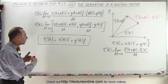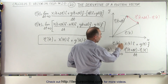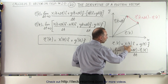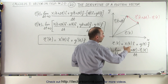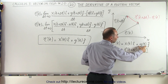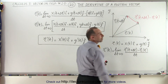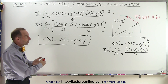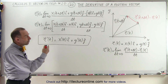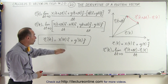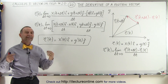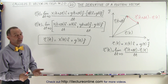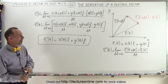So you can see that whatever function you have, if you want to know the derivative of the position vector, you simply take the derivative of the x component with respect to the parametric variable t, and you take the derivative of the y component with respect to the parametric variable t. If you have a function defined in terms of x and y components, simply take the derivative of each component, and that will give you the derivative of the position vector. It's as simple as that, and we'll show you some examples of how to do that.